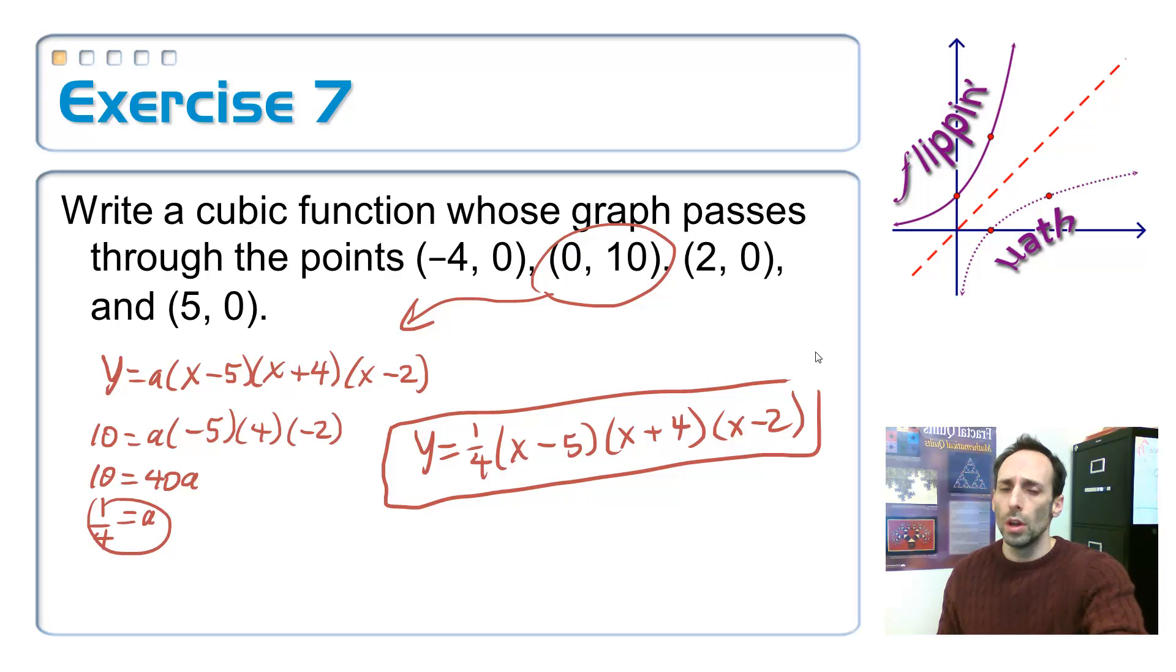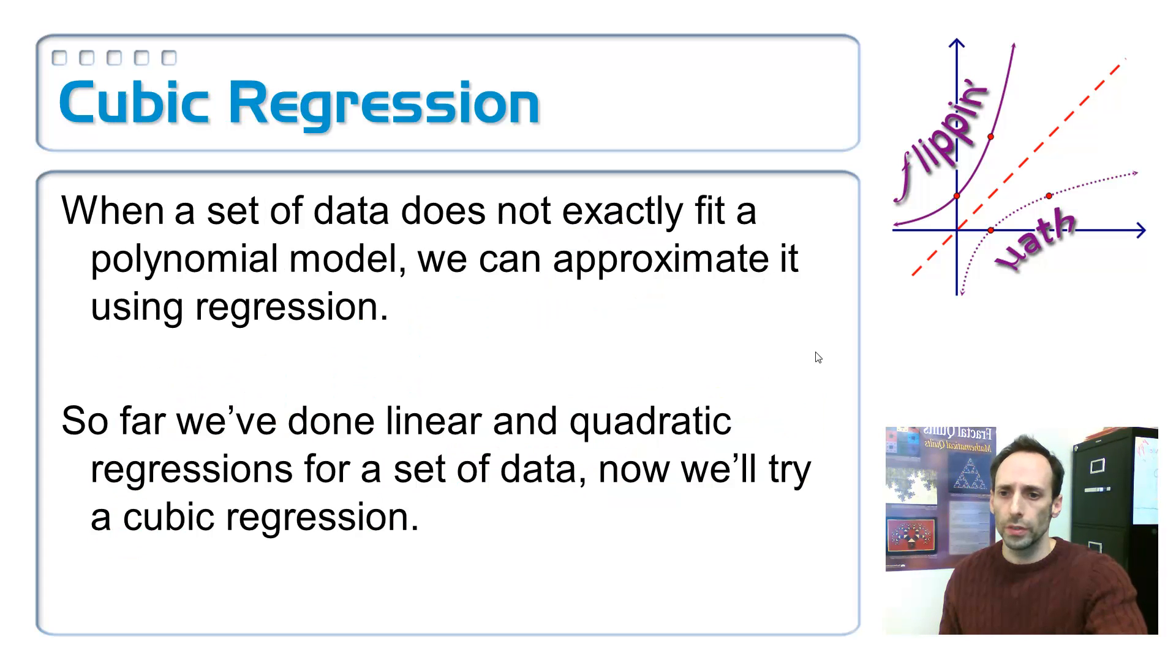Okay, there's only one more part of this, and that involves, well, what if you just have a collection of data, and you want to find the equation, the graph that goes with it? So, we've done regressions before. We've done them for lines, linear regression, finding the line of best fit, and we've done them for quadratics. Now we're going to do them for cubics. The only difference between this regression and all the other ones is a button press. Instead of pushing linear regression or quadratic regression, we choose cubic regression.